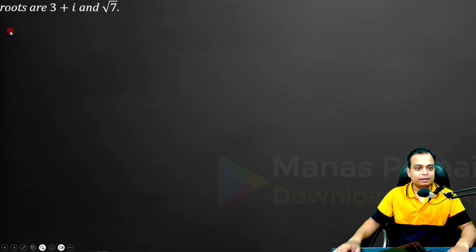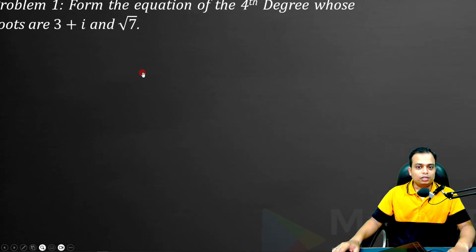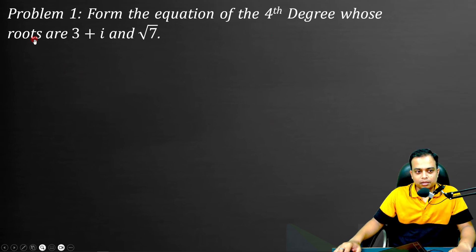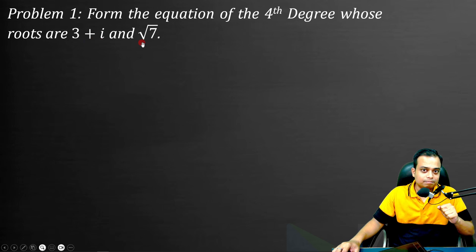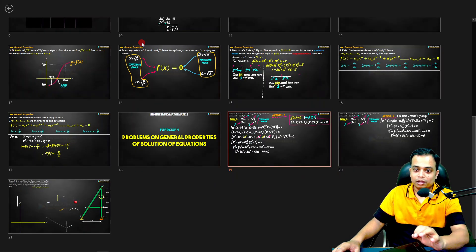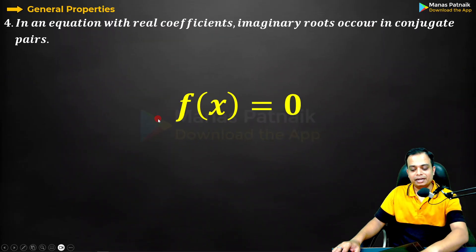Let's begin with problem number one. Form the equation of fourth degree whose roots are 3 plus iota and root 7. What's so special? The special thing is this is an imaginary root and this is an irrational root.